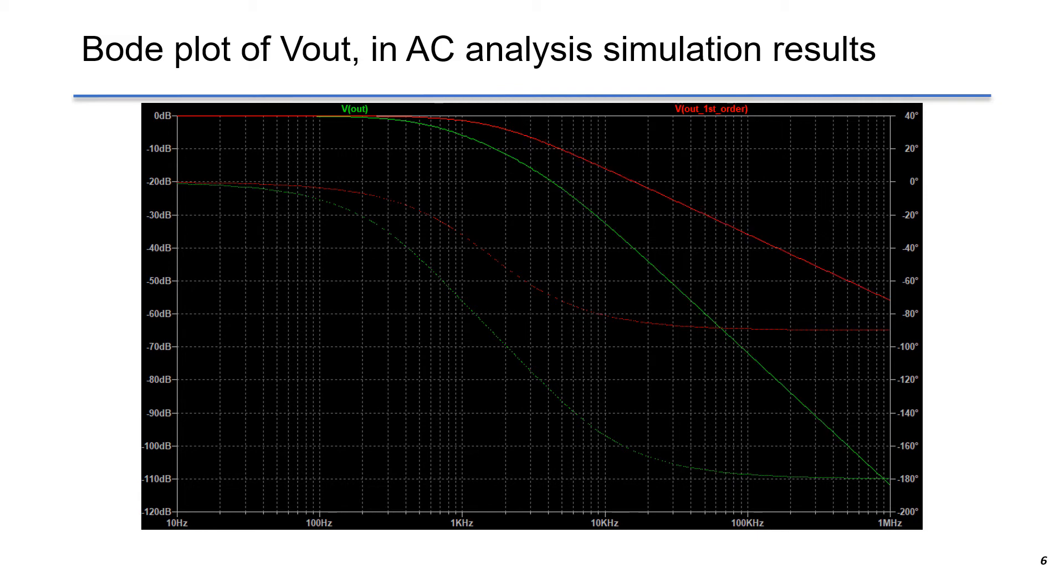Also, the phase of the second-order low-pass filter is approaching minus 180 degrees instead of minus 90 degrees as shown in the first-order system.